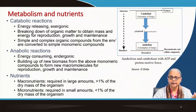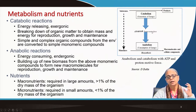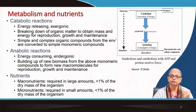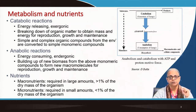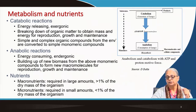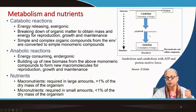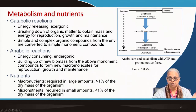Energy is released in catabolic reactions, and therefore they are called exergonic reactions. This energy released in catabolic reactions is trapped in the form of ATP — that is why we say ATP is the cell's currency of energy. In the case of prokaryotes, this energy is first trapped in the form of proton motive force, which is then converted to ATP.